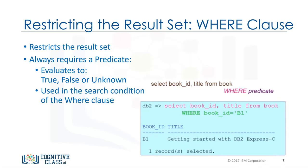The WHERE clause always requires a predicate. A predicate is a condition that evaluates to true, false, or unknown. Predicates are used in the search condition of the WHERE clause.